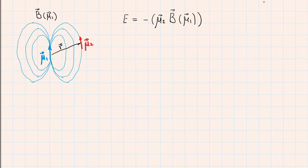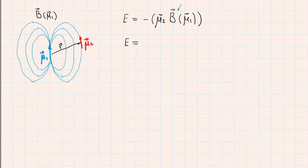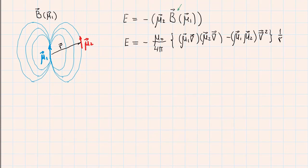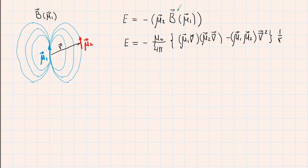The energy of the magnetic moment mu2 in the magnetic field of the magnetic moment mu1 can be written as this expression. Here magnetic field B is determined by the formula which I derived above. If we insert this expression for the magnetic field B, we will obtain the energy formula. Hence, we have obtained a formula for the interaction of two magnetic moments.